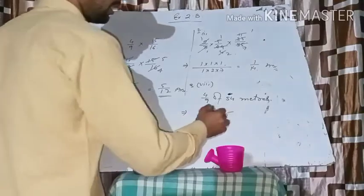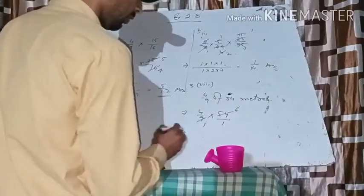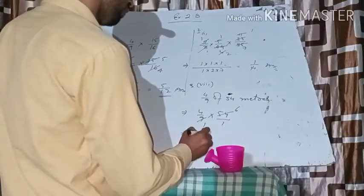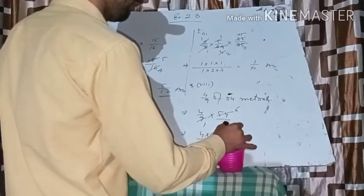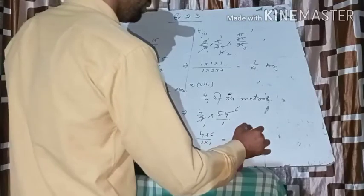Nine, one for nine; nine, six for fifty-four. Do it: four into six upon one into one. We got twenty-four by one meter.